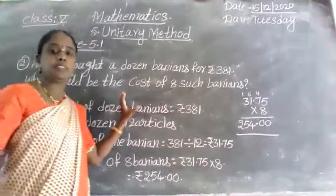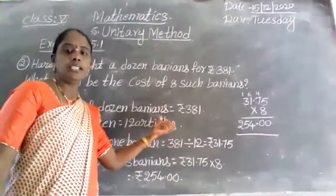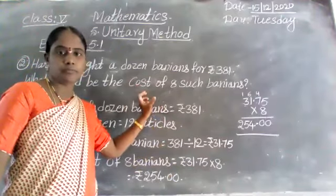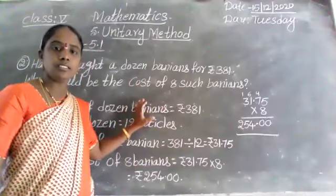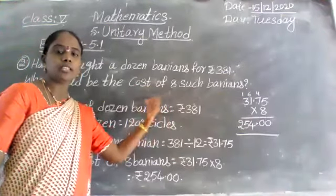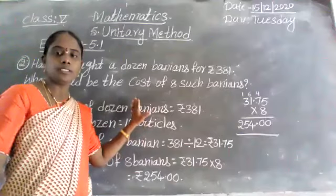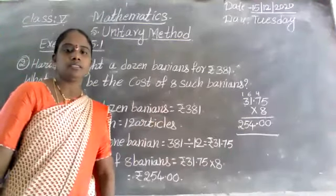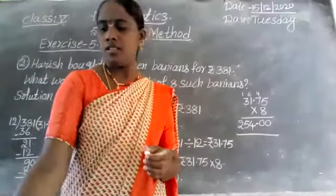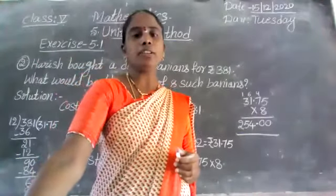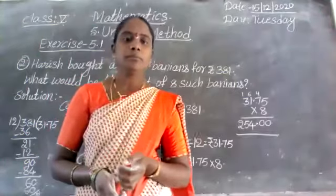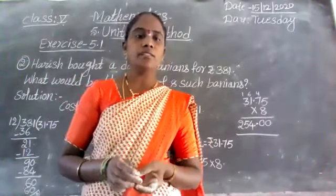Did you understand children how to do unitary method problems? First we do division, then multiplication. First we find the cost of each one item, then we find the cost of how many things are required in the problem. Remaining problems on page number 64, Exercise 5.1 and revision exercise — try to do them on your own. If you have any doubt, raise your hand or send me a message. In tomorrow's class I will explain the same problems again.